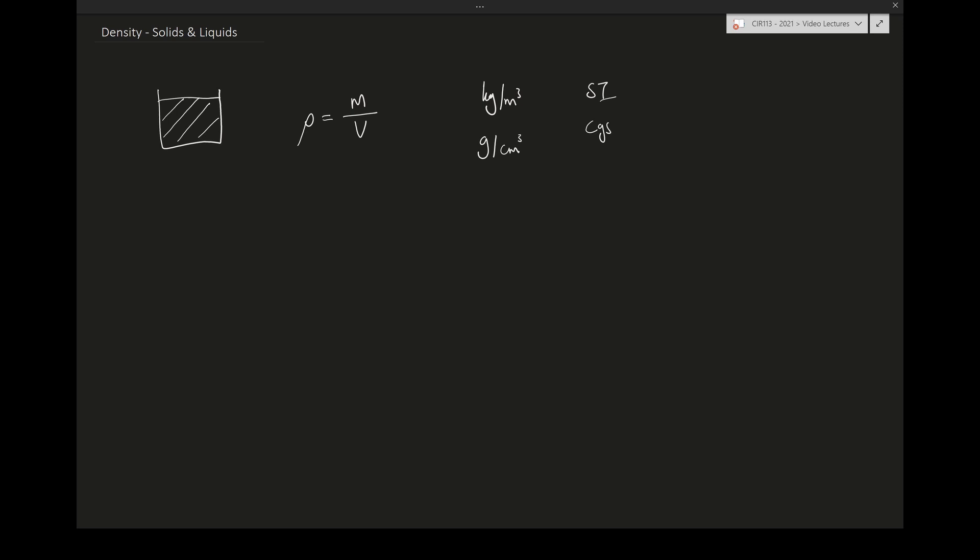You can also change cubic centimeter into liters. In the American or imperial system, it is pounds mass over cubic foot. Density is related to another quantity called specific volume.